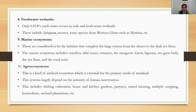The next ecosystem is the marine ecosystem, considered habitats that range from the shores to the dark sea floor. The marine ecosystem includes marshes, tidal zones, estuaries, mangrove forests, lagoons, seagrass beds, the seafloor, and coral reefs.